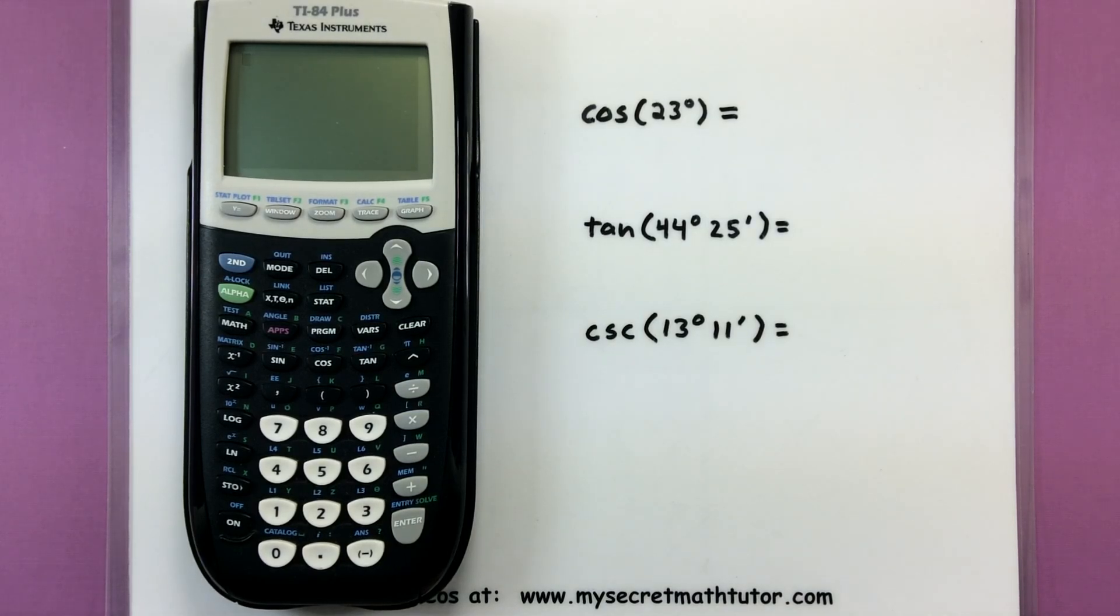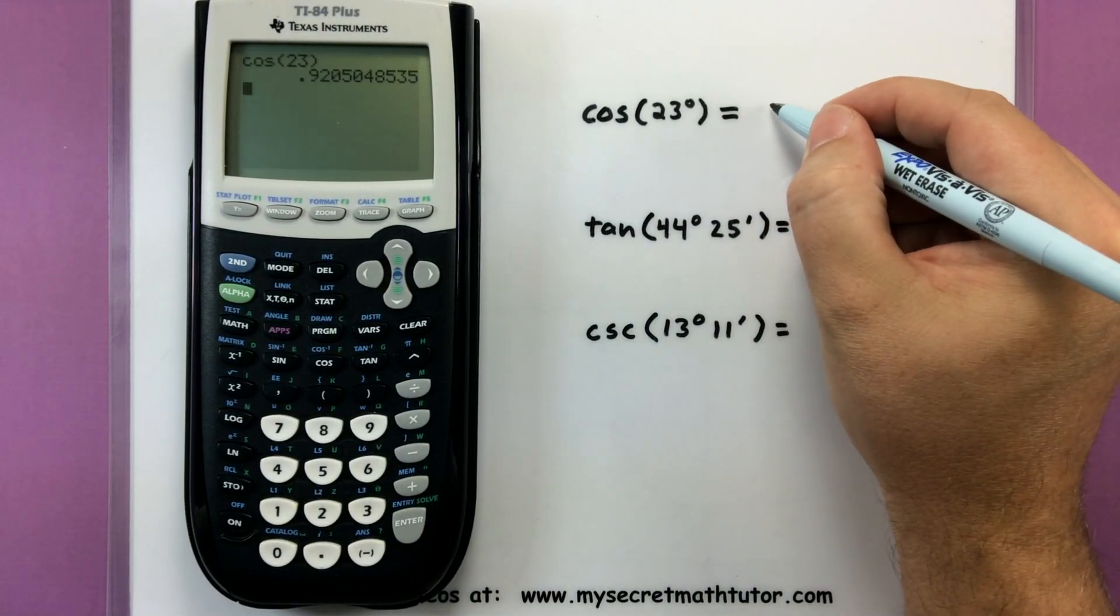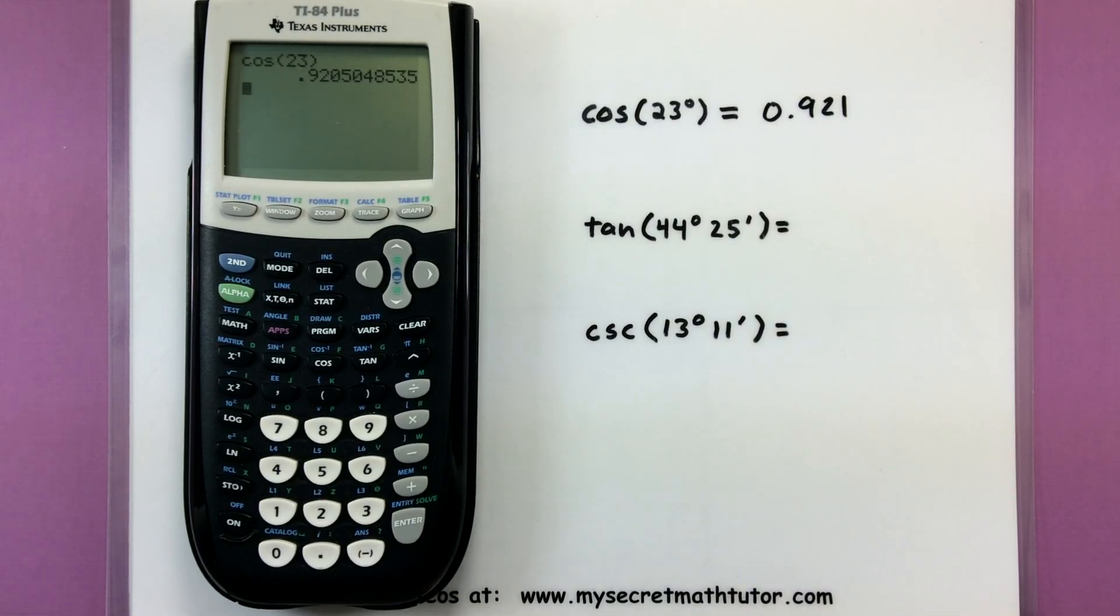Now, if it's already in degree mode and you type in something like cosine of 23, the calculator will assume that that 23 is 23 degrees. So no surprises there, I can usually just type in cosine of 23 and it'll give me the answer. So let's write this as 0.921, rounding to three decimal places.